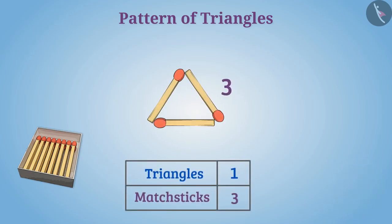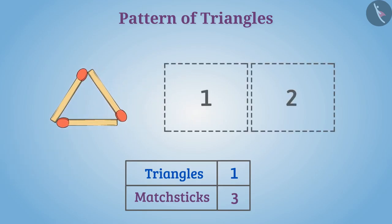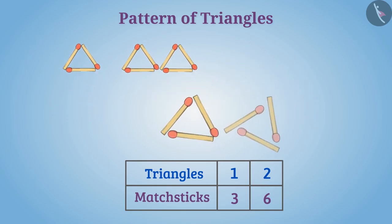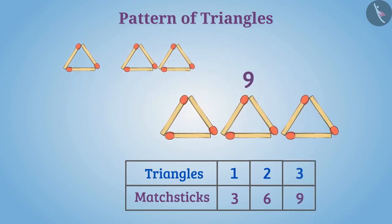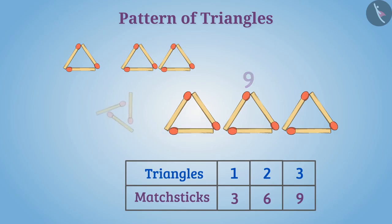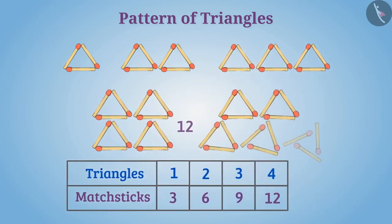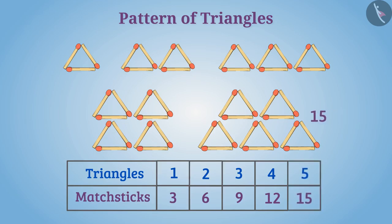Three. Now if we want to make two triangles, how many matchsticks will be required? For two triangles six matchsticks will be required. In the same way, for three triangles nine matchsticks will be required, for four triangles twelve matchsticks, and for five triangles fifteen matchsticks will be required.